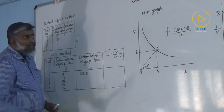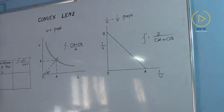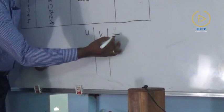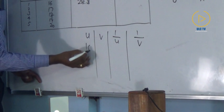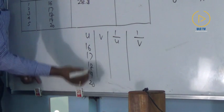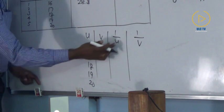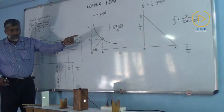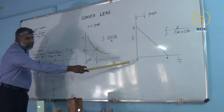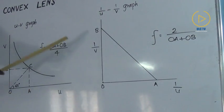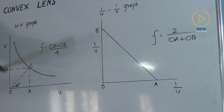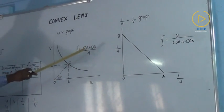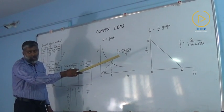The next method is the 1/U vs 1/V graph. For that, take the U values — 16, 17, 18, 19, 20 — and corresponding V values. Calculate 1/U and 1/V. Plot 1/U values along the X axis and 1/V values along the Y axis. We get a straight line graph AB. Measure OA and OB in the graph. The focal length can then be calculated as F = 2 / (OA + OB).